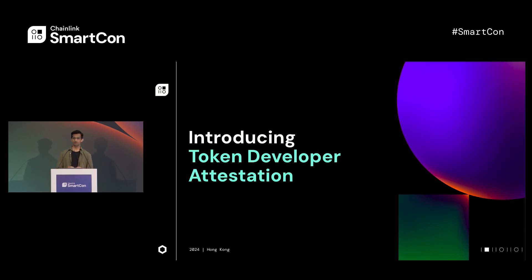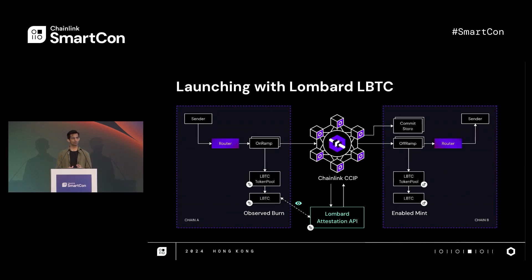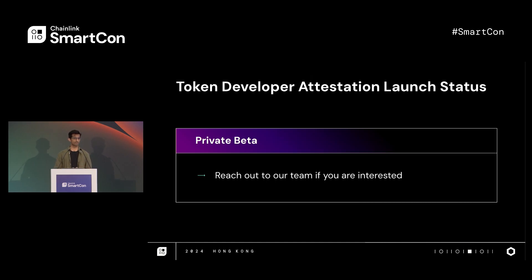We're introducing token developer attestation. For the first time, token developers can now participate in the network security of CCIP. They can do this by independently attesting that the tokens were indeed burned on the source chain before CCIP can mint them on the destination. We're proud to say that we're launching this in partnership with Lombard and their LBTC token. Lombard is providing an independent, third-party attestation API confirming that the LBTC tokens were burned on the source chain before CCIP can mint them via the off-ramp on the destination. Though this is not part of the self-serve capabilities, it is launching in private beta starting today.